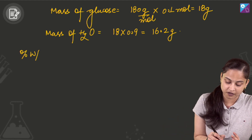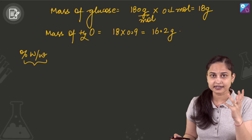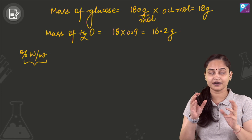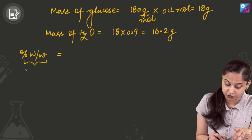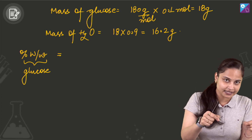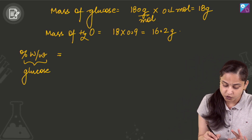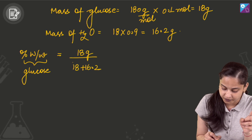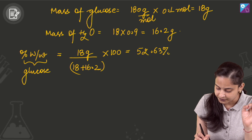We will be calculating percentage weight by weight, which means the amount of solute in grams present per 100 grams of the solution. So, percentage weight by weight of glucose equals 18 grams divided by (18 + 16.2), multiplied by 100, which comes out to be 52.63%.